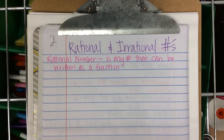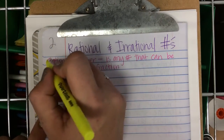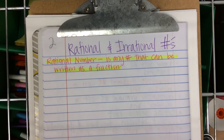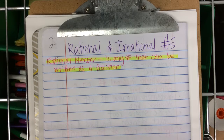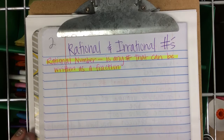I'm going to highlight that, because obviously that's one of my main ideas. The notes are titled 'Rational and Irrational Numbers.' Main idea: a rational number is anything that can be written as a fraction — any number that can be written as a fraction.